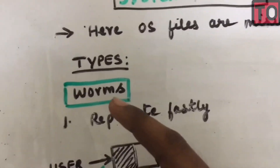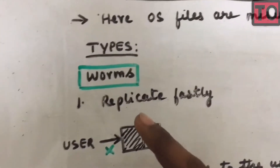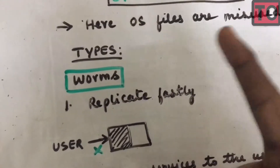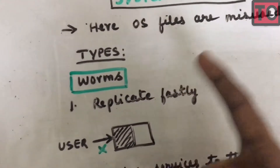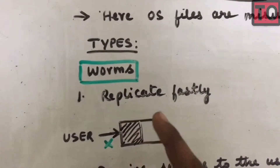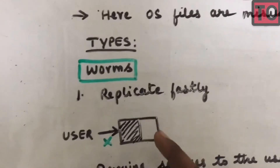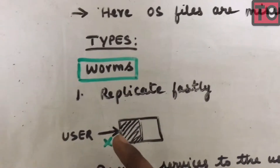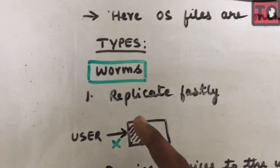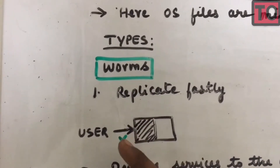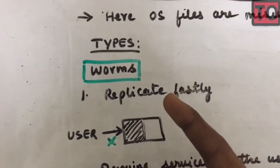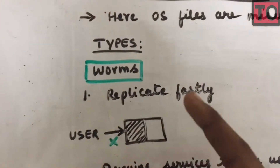Type 1 is Worms. Worms replicate fastly. If you have one worm, it becomes another worm, and another. For example, this is an OS with a worm-affected area and a non-worm-affected area. A user on your computer is infected with OS — you will get access denied. That is why Replicate Fastly is a worm.